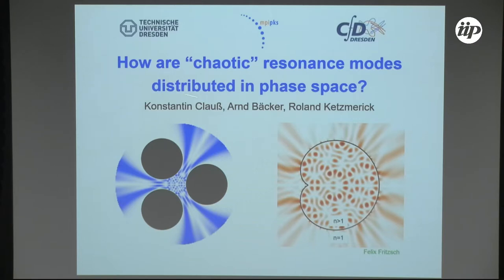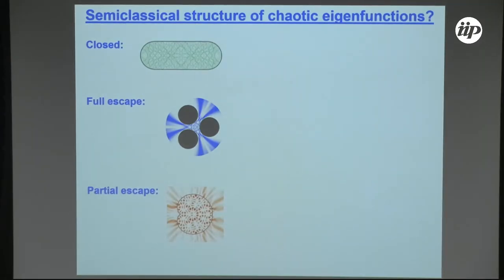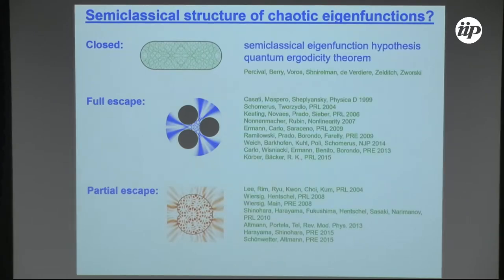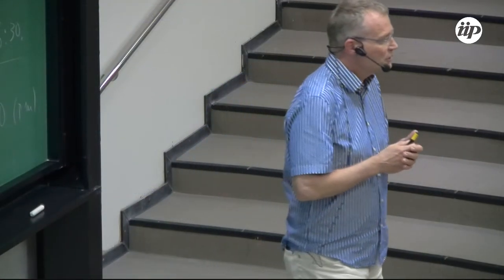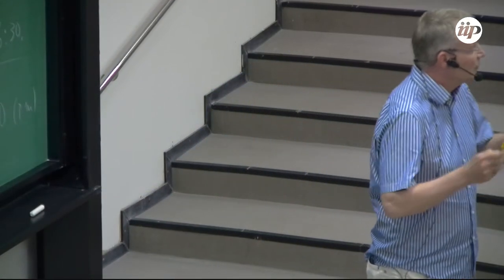My co-workers on this are Konstantin Klaus, who is finishing his PhD, and Arndt Becker. To give you the perspective, I add here a closed stadium billiard to this list of systems, and the very simple question is, how do eigenfunctions look like in these systems? We know a lot about this for closed systems — we have the semiclassical eigenfunction hypothesis, quantum ergodicity theorem, going back to Percival and Berry, and many others.